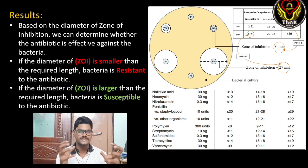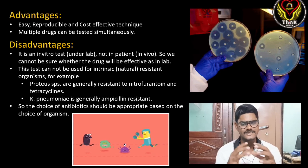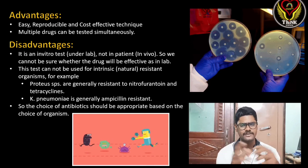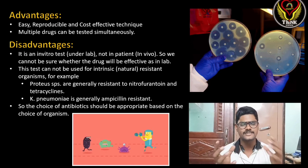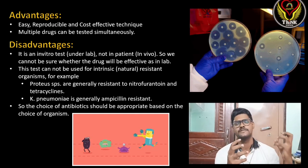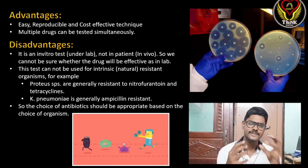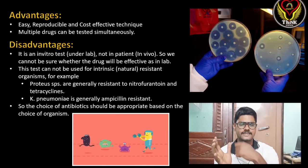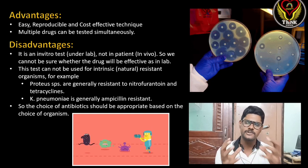If the diameter of the zone of inhibition is larger than the required length, the bacteria is susceptible to that antibiotic. Coming to the advantages of this technique: it is a very easy and reproducible method — we just require a petri plate, Muller-Hinton agar, antibiotic discs, and bacterial culture. It is cost effective and multiple drugs can be tested simultaneously by placing four to five antibiotic discs in the petri plate.